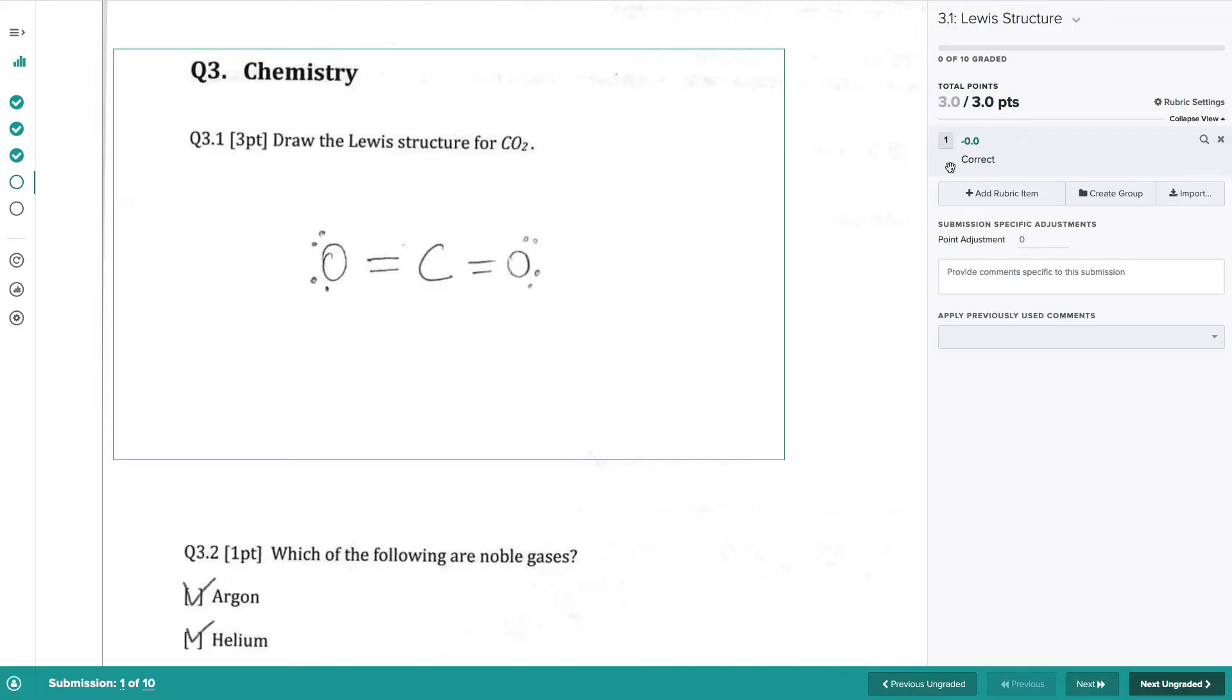The current student indeed has the correct answer, so we can just select the existing entry in the rubric and we just graded the first student.